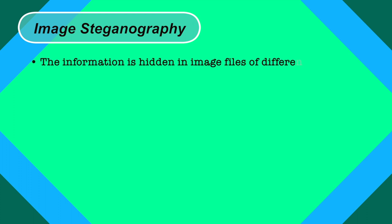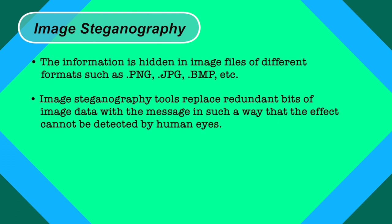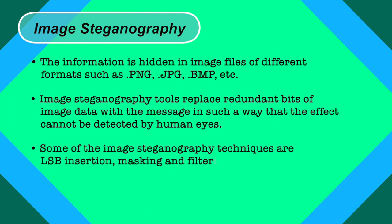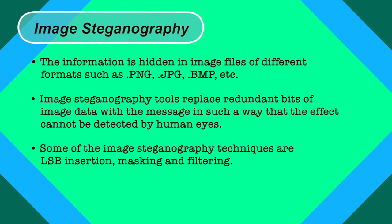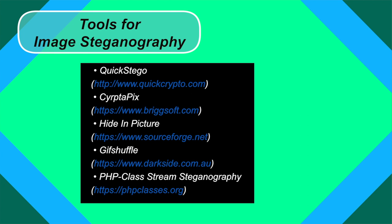In image steganography, information is hidden in image files of different formats such as .png, .jpg, .bmp, etc. Image steganography tools replace dependent bits of image data with the message in such a way that the effect cannot be detected by human eyes. Techniques include LSB insertion, masking and filtering. Tools for image steganography include Quickstego, Cryptopix, Hide in Picture, GIF Shuffle, and PHP Class Stream Steganography. Links for all software are given in the slide.